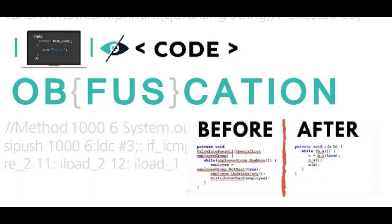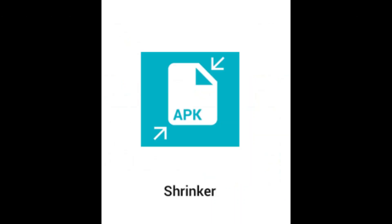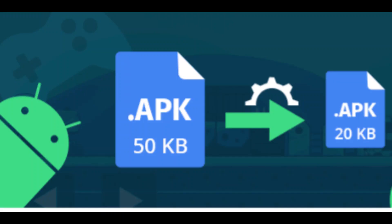By doing so, reverse engineering becomes difficult. ProGuard also shrinks resources — it ignores all the resources that are not being called in the Android application. This will significantly reduce the app size. To keep the app light and fast, you should always shrink it.